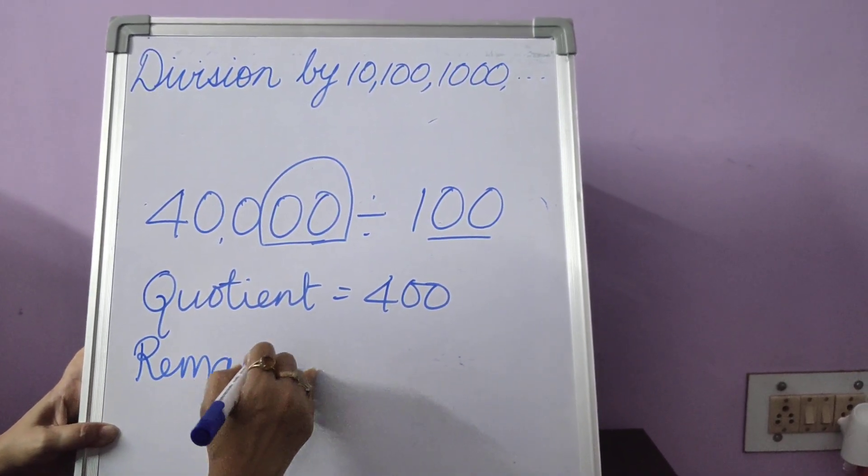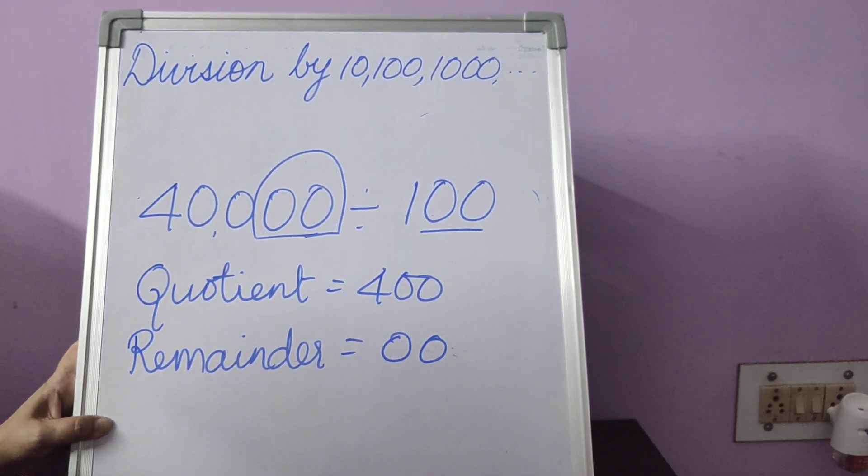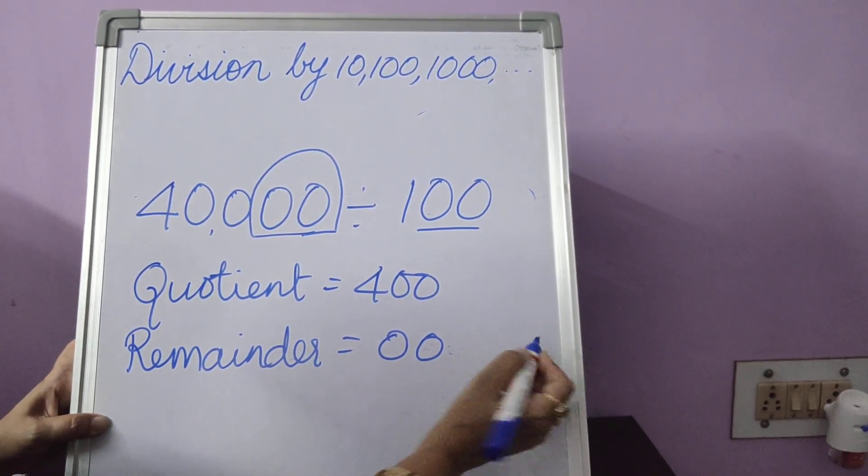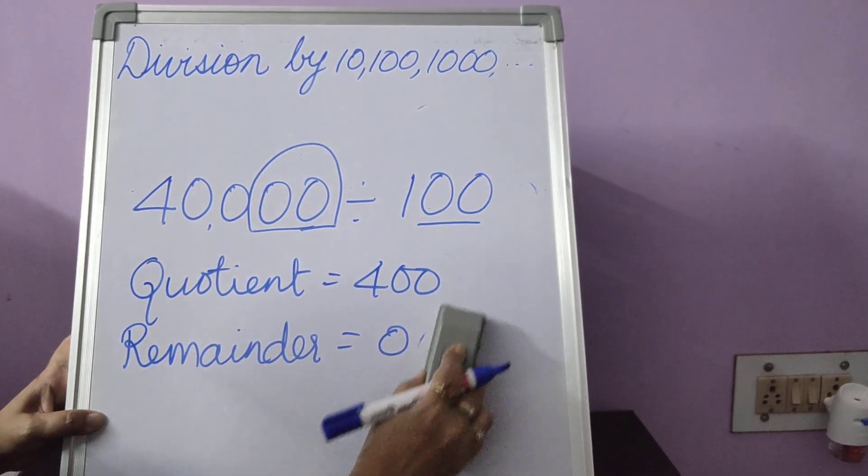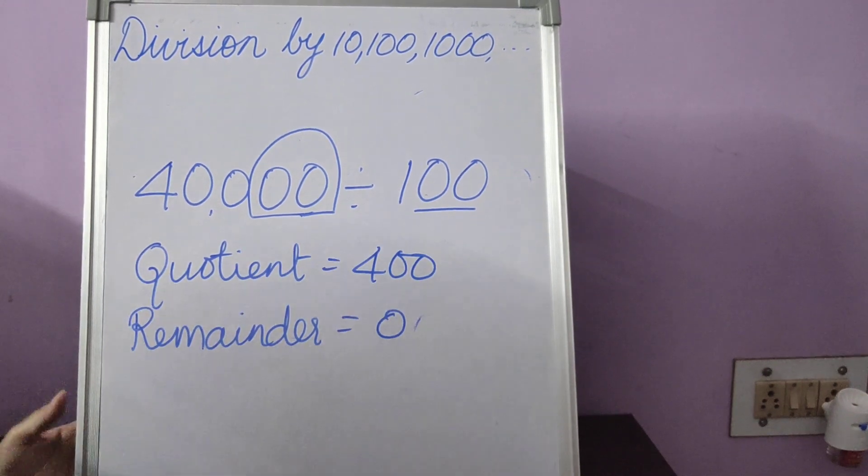Remainder, we have two zeros over there. No need to write two zeros. Whether you write two zero, three zero, four zero, they are all zeros. So one zero is more than enough. You want to write two zero? You can easily write it. It won't be wrong.